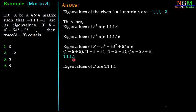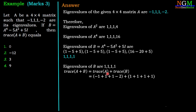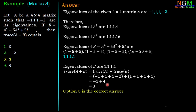Therefore, the eigenvalues of B are 1, 1, 1, 1. Now, trace(A + B) = trace(A) + trace(B). Trace of A is the sum of eigenvalues of A: -1 + 1 + 1 + (-2) = -1. Trace of B is the sum of eigenvalues of B: 1 + 1 + 1 + 1 = 4. So trace(A + B) = -1 + 4 = 3. The correct answer is option 3.